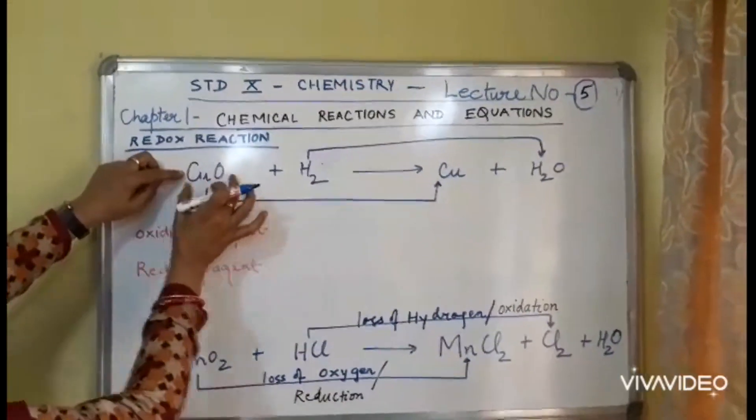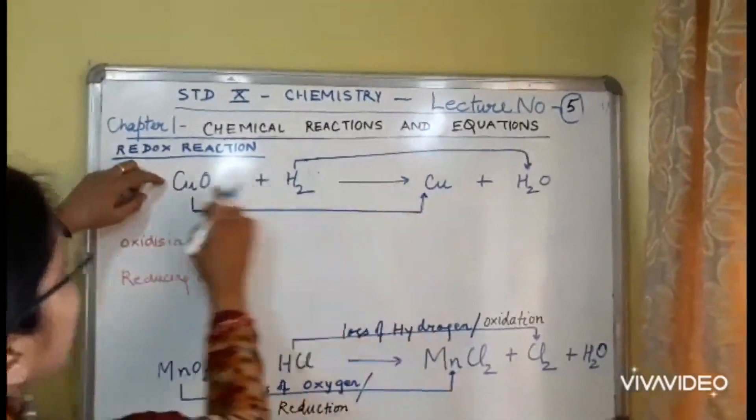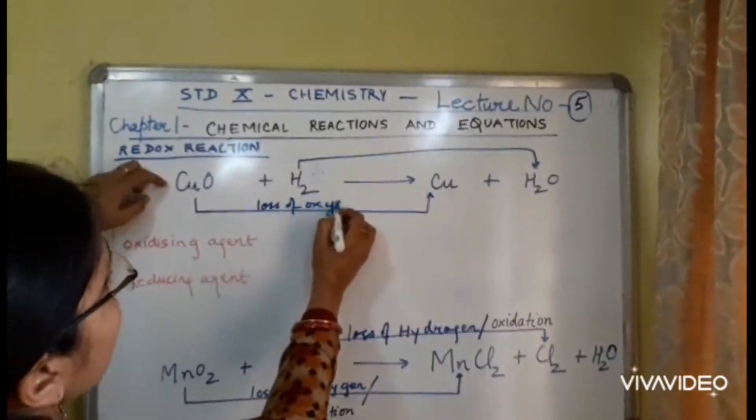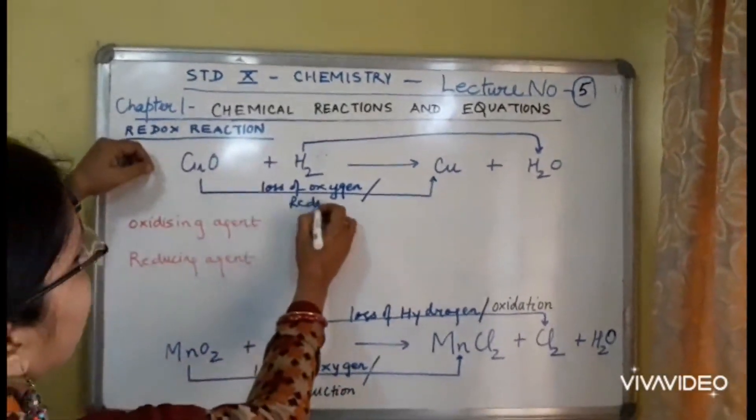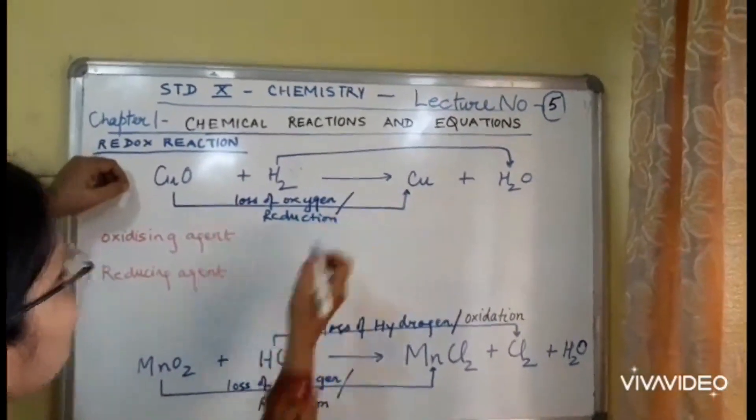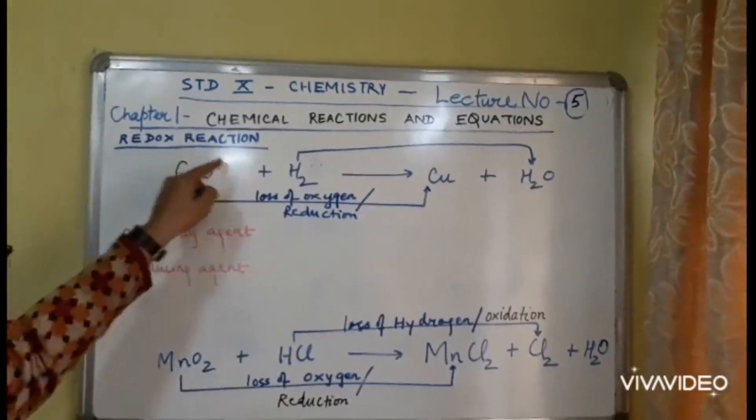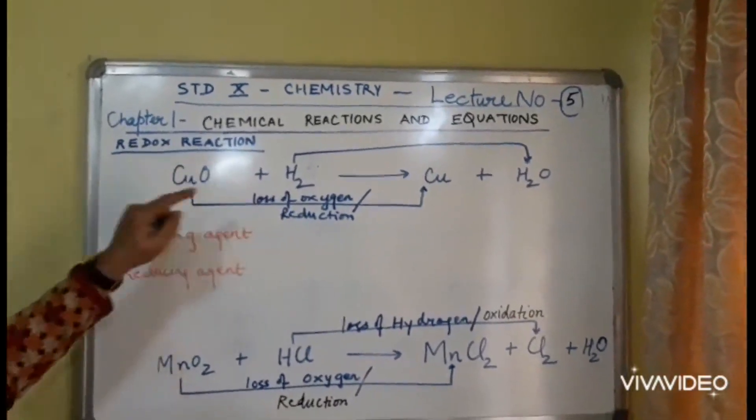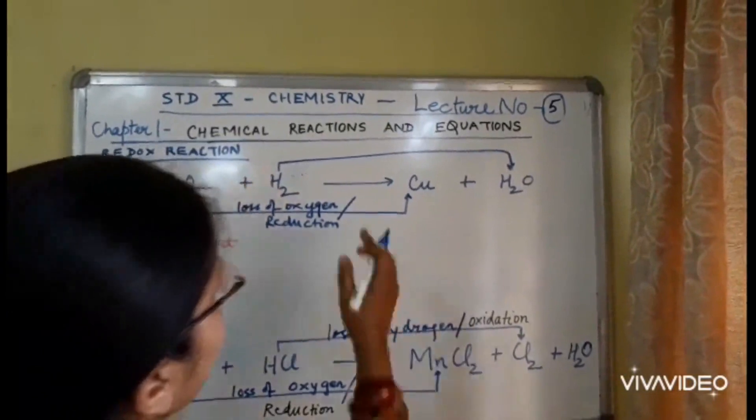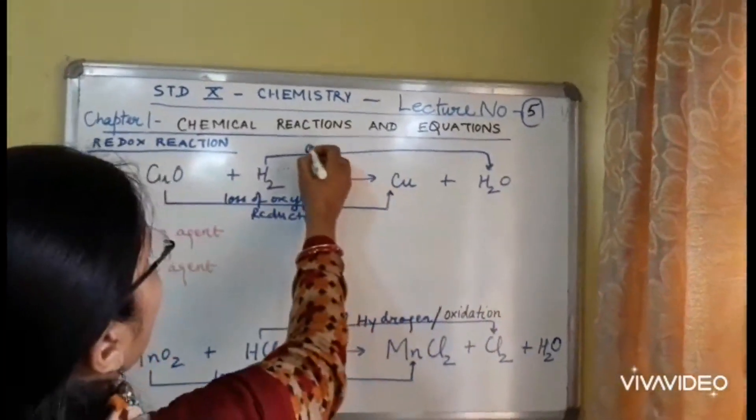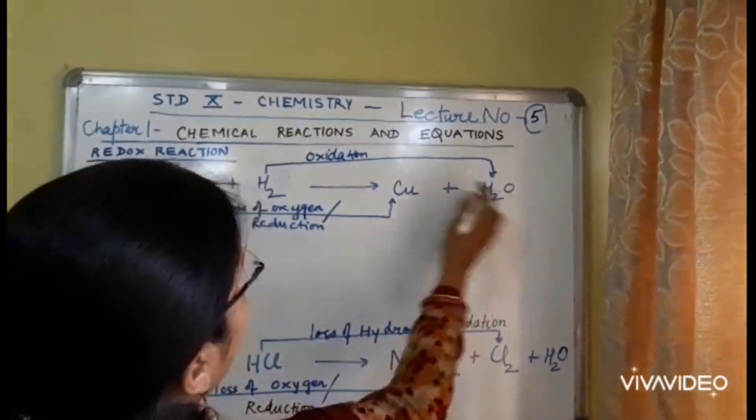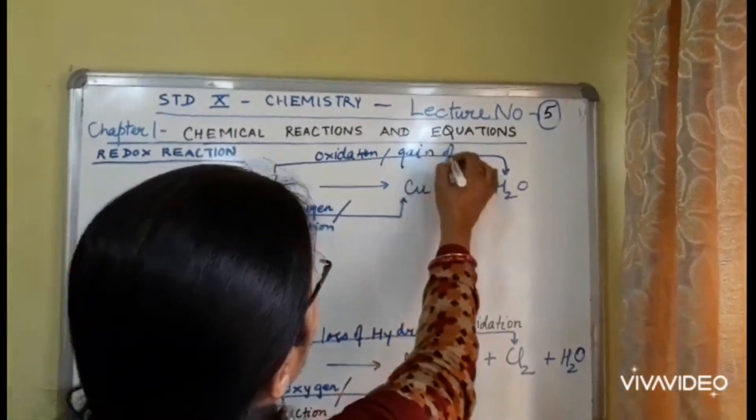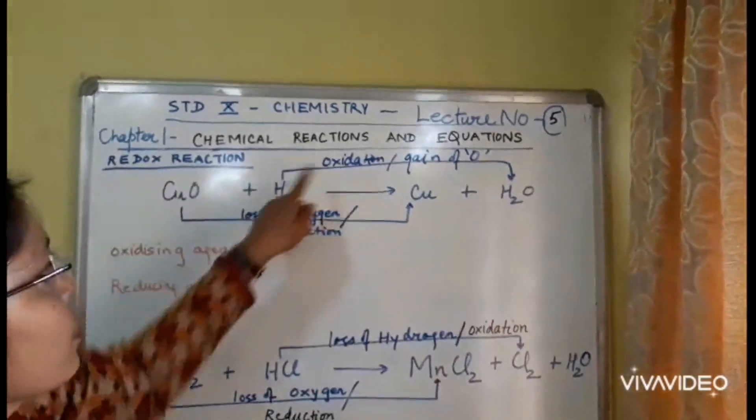CuO is changing to copper. Can you see? There is loss of oxygen. Loss of oxygen, what did I tell you? It is reduction. So this is reduction. So if a question comes, what is getting reduced? You have to say cupric oxide. Hydrogen gains oxygen and changes to water. So this is oxidation. O is being added. That is gain of oxygen. Gain of oxygen is oxidation.